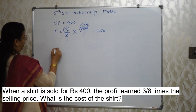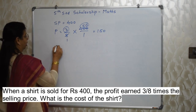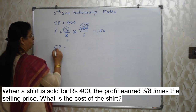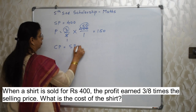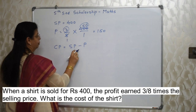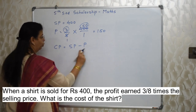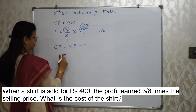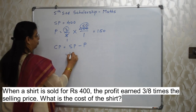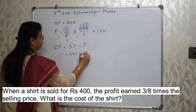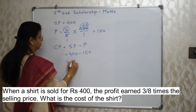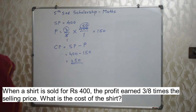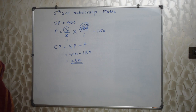Once we know the profit, we use the formula: CP = SP − Profit. If you don't know this you won't be able to proceed. So CP = 400 − 150 = Rs. 250. The cost price of the shirt is Rs. 250.